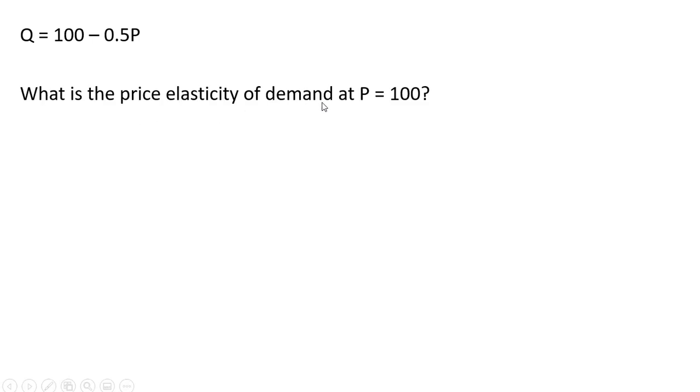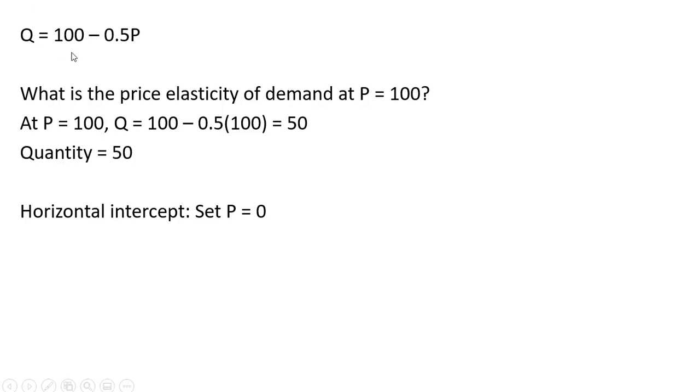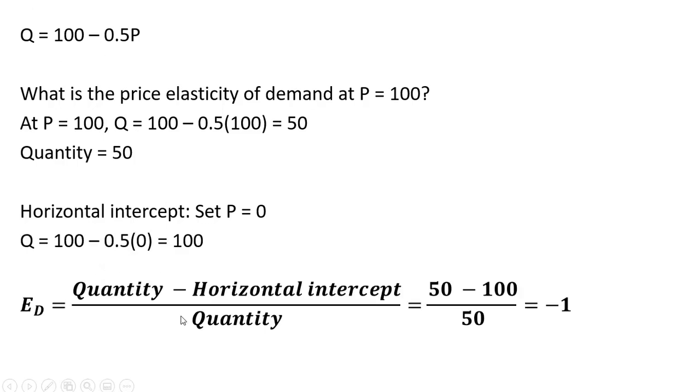What is the price elasticity of demand at P = 100? At P = 100, Q = 50. Let's get the horizontal intercept. Set P equal to 0. Horizontal intercept is 100. Following our formula, the price elasticity of demand is minus 1.